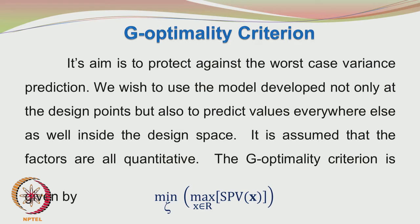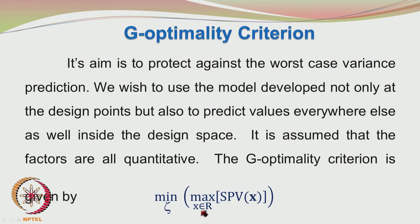Related to the scaled prediction variance is the G-optimality criterion. The objective of this is to protect against the worst case variance prediction. The model should not only predict well at the design points but also at all other points in the design space. Assuming that the factors are all quantitative, the G-optimality criterion is given by identifying the scaled prediction variance in the experimental design space, finding the maximum value, and then finding the design zeta such that this maximum value is minimized.